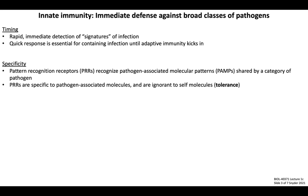A key point regarding innate immune specificity is that pattern recognition receptors must only recognize molecules that could be introduced by foreign infectious agents, and these receptors must remain ignorant or non-reactive to self-molecules. This brings up the concept of immune tolerance, which will be a recurring theme in this course.